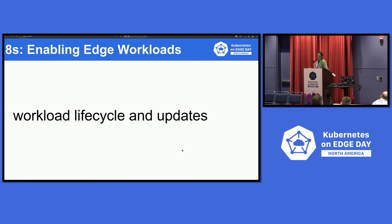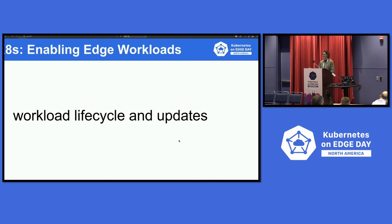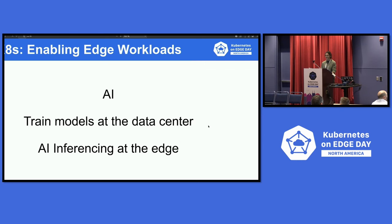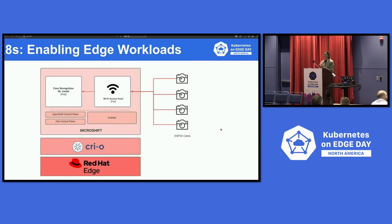Workload updates are also a tricky subject with edge. Everybody does it a different way, but the one thing for sure is it has to be automated through a central location — that's where Kubernetes definitely helps. You can take your automation platform of choice; I'm familiar with Ansible Automation Platform, and it's all through container images. When it gets difficult is when you start to introduce AI inferencing at the edge, training your models at the data center — that's where you might want to use Kubernetes native workflows at the edge.